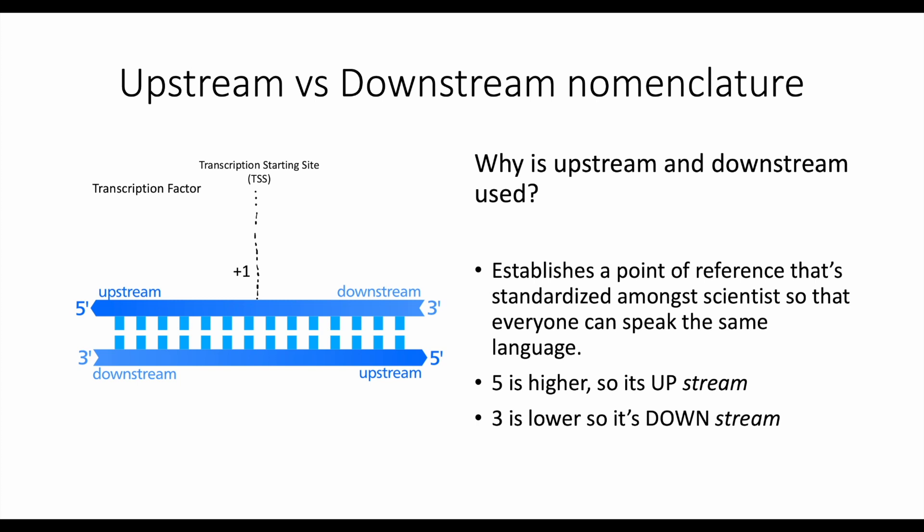On the top allele, the left side is upstream and the right side is downstream. On the bottom allele, the left side is downstream and the right side is upstream. You must know whether it's five prime or three prime.